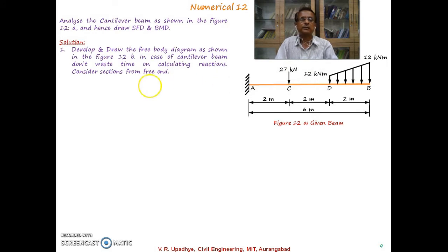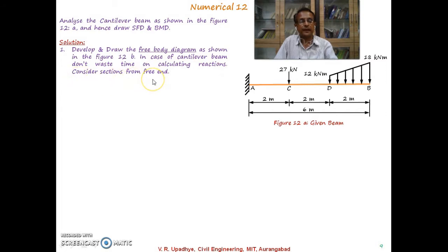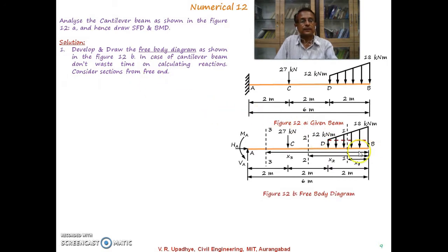We will not be calculating reactions at support A, because since B is the free end, if we consider sections from the free end and look at the right part of each section, all forces are known. So reactions are not required. It is advised to develop and draw the free body diagram as shown in Figure 12B. For a cantilever beam, don't waste time calculating reactions — directly consider sections from the free end. So B will be the origin for all sections.